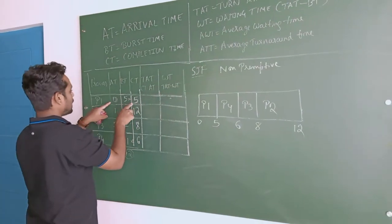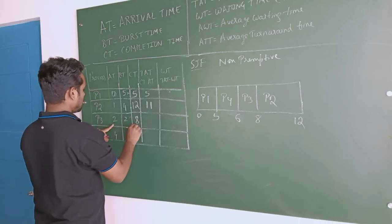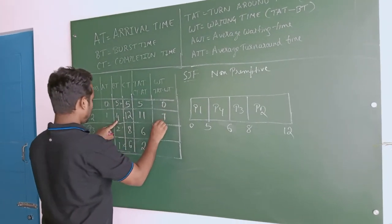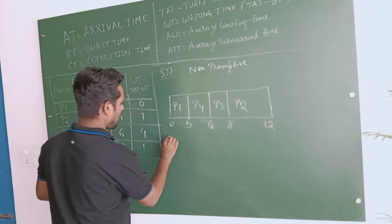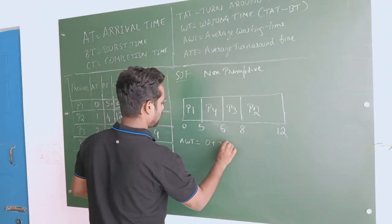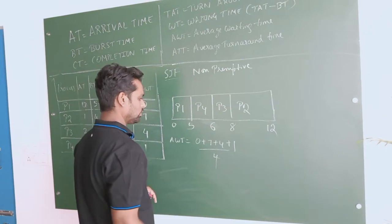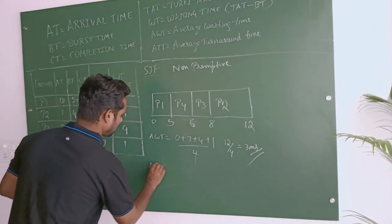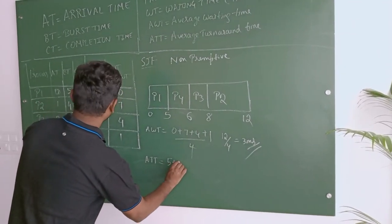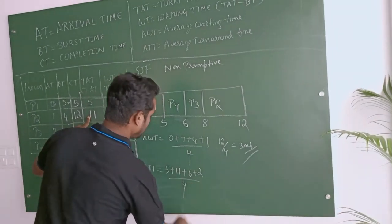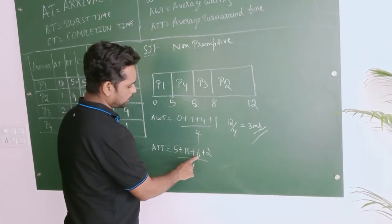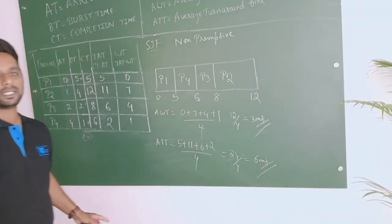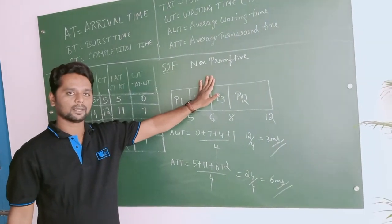Completion times: P1 = 5, P2 = 12, P3 = 8, P4 = 6. Turnaround time = completion time minus arrival time: P1 = 5 - 0 = 5, P2 = 12 - 1 = 11, P3 = 8 - 2 = 6, P4 = 6 - 4 = 2. Waiting time = turnaround time minus burst time: P1 = 5 - 5 = 0, P2 = 11 - 4 = 7, P3 = 6 - 2 = 4, P4 = 2 - 1 = 1. Average waiting time = (0 + 7 + 4 + 1) / 4 = 12 / 4 = 3 milliseconds. Average turnaround time = (5 + 11 + 6 + 2) / 4 = 24 / 4 = 6 milliseconds.